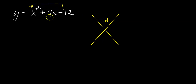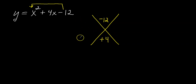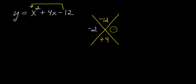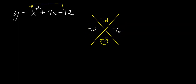The plus 4x slides down to the bottom of the diamond, but I won't include the x — just the plus 4, the middle term. Now I'm thinking: are there two numbers that when multiplied give me minus 12, but when added give me plus 4? Hopefully you're thinking negative 2 and positive 6. Negative 2 times positive 6 is negative 12, and negative 2 plus 6 is positive 4.